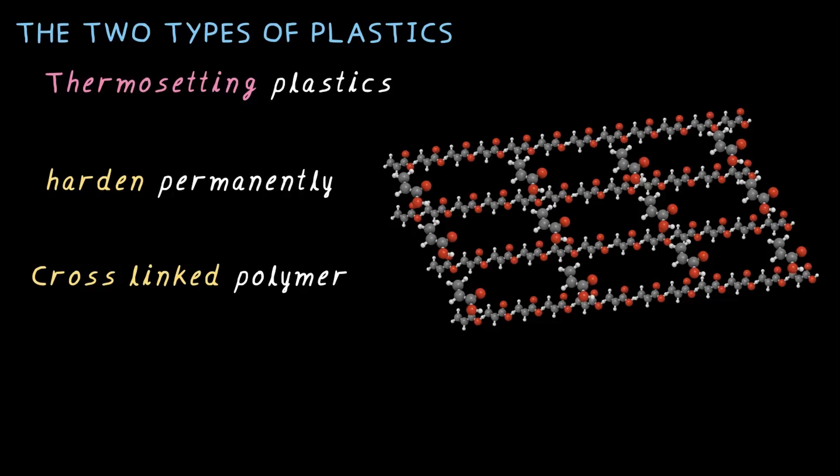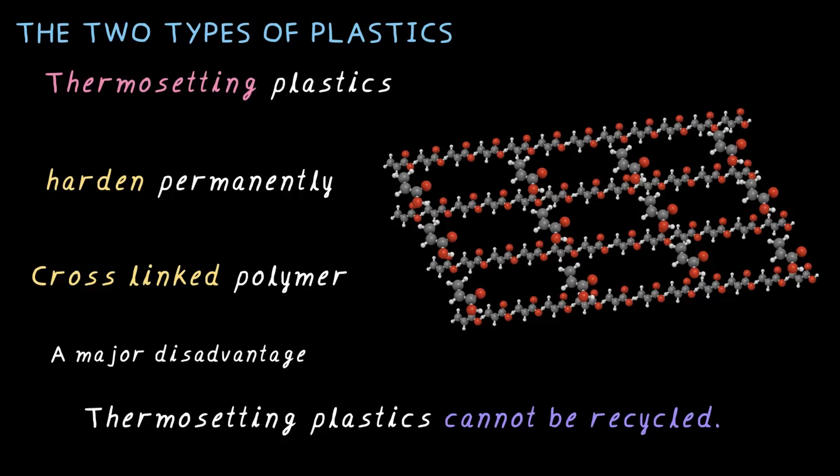And a major disadvantage is that they cannot be recycled. Once they are made, they are stuck in that shape forever. Let's check out some examples of thermosetting plastics and why they are so important despite this major disadvantage.